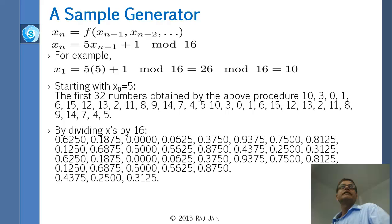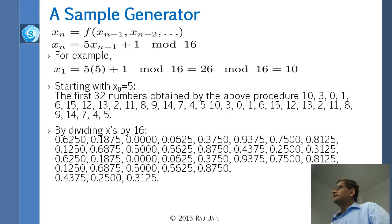So you get 10, 3, and then putting 3 you will get 0, 1, 16, and so on. This is the sequence you will get. You can divide all the numbers by 16, and then you get a sequence of numbers that are uniformly distributed between 0 and 1. And if you did not know the formula, they look random.